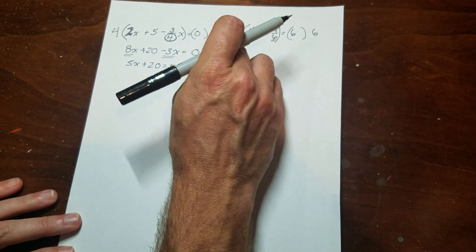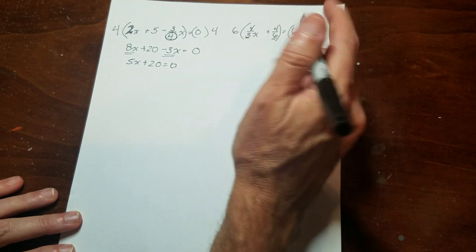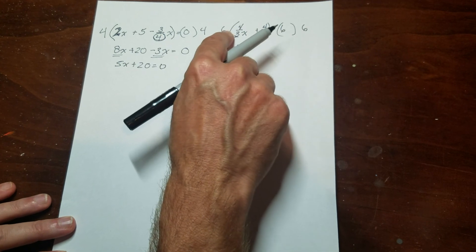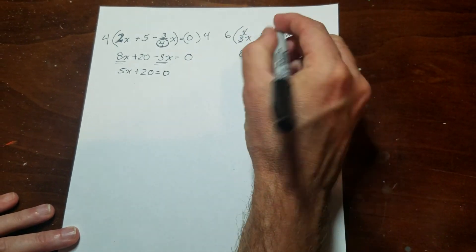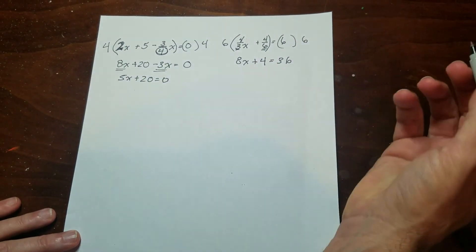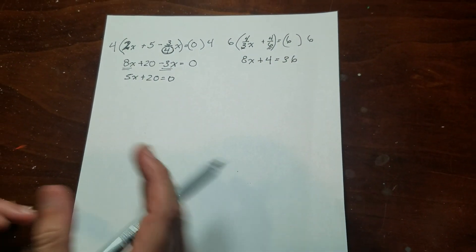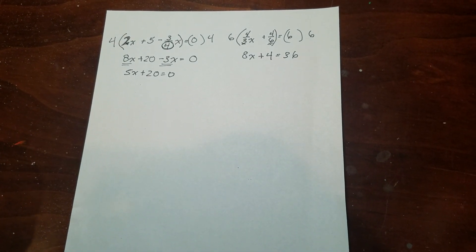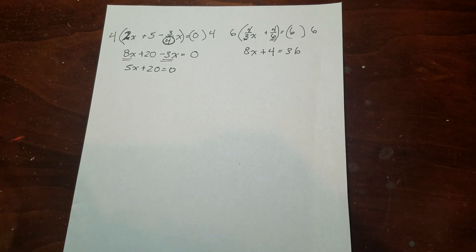So 3 goes into 6 twice. 2 times 4 is 8. And then 6 goes into 6 one time. And 1 times 4 is 4. And this is 36. So again, I get a two-step equation. As I said before, you can do your usual stuff. Additive inverse, then multiplicative inverse, and then you're done. But this is how you handle fractions when they're in equations.